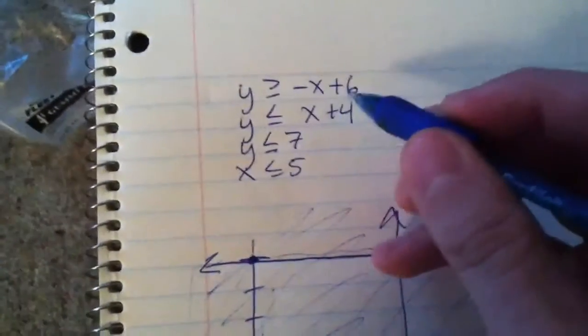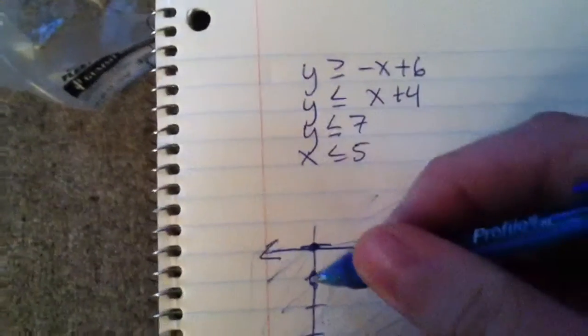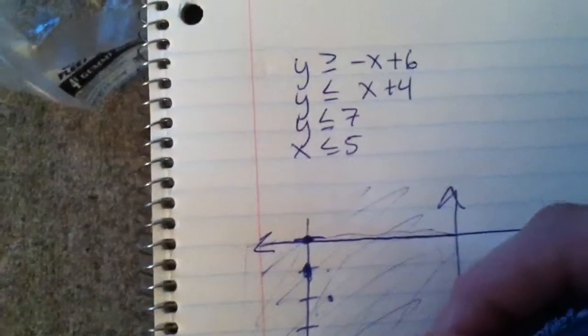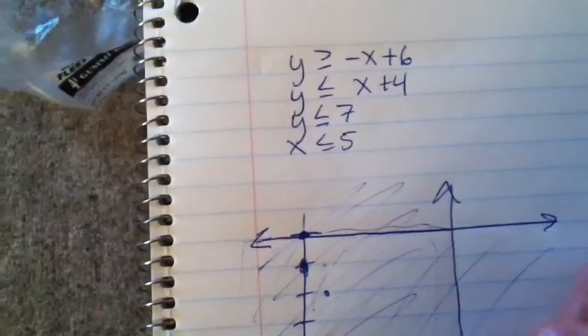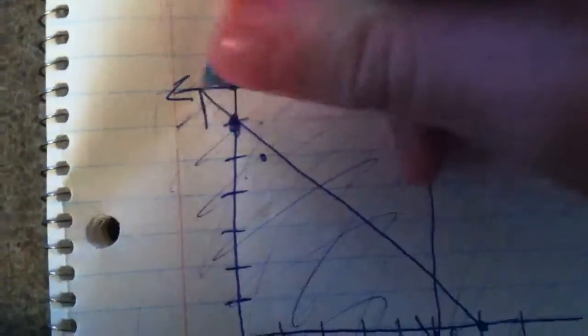And now we graph the top ones, plus 6. 1, 2, 3, 4, 5, 6. Negative 1 means down 1 over 1. So these will match up kind of like that.